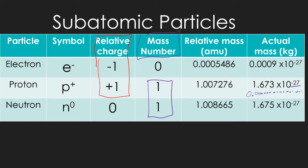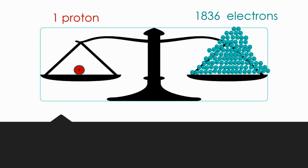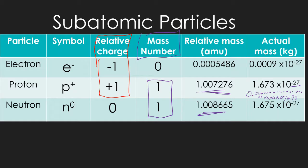The mass of a proton would otherwise be written as a decimal with 26 zeros before 1673. So instead, we define the atomic mass unit as equal to 1.673 × 10⁻²⁷ kilograms. The AMU of a proton and neutron are pretty much the same, so we call them both 1, and we call the electron's mass number zero because it's significantly less.